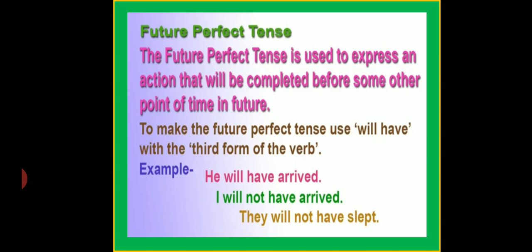Future Perfect Tense is used to express an action that will be completed before some other point of time in future. We use Future Perfect Tense to express an action that will be completed in future.